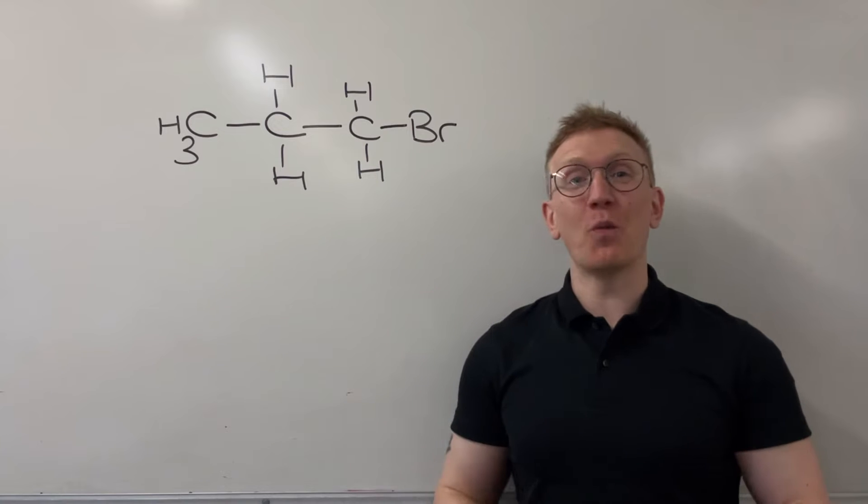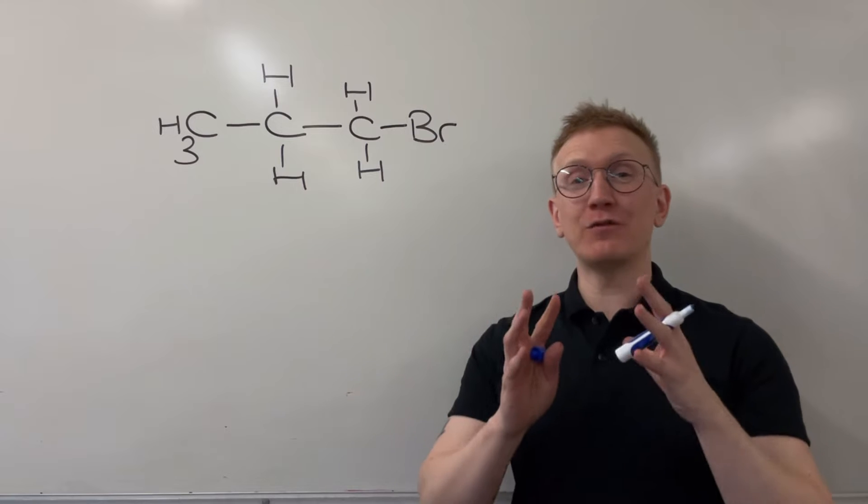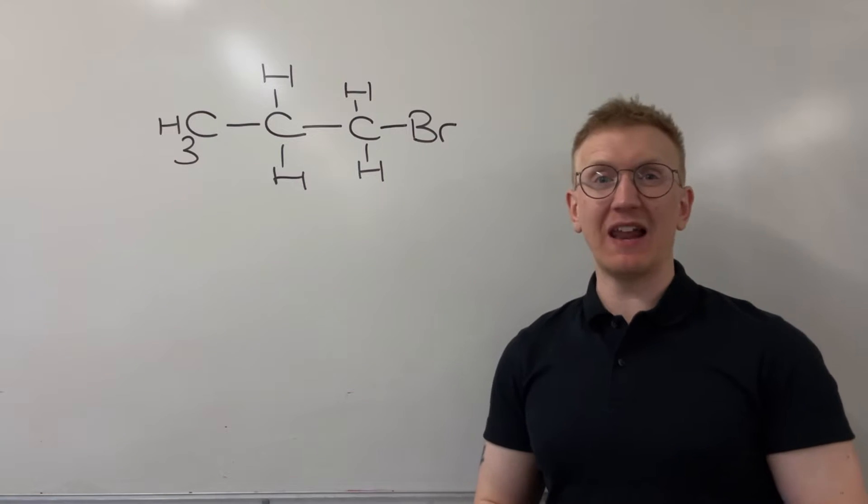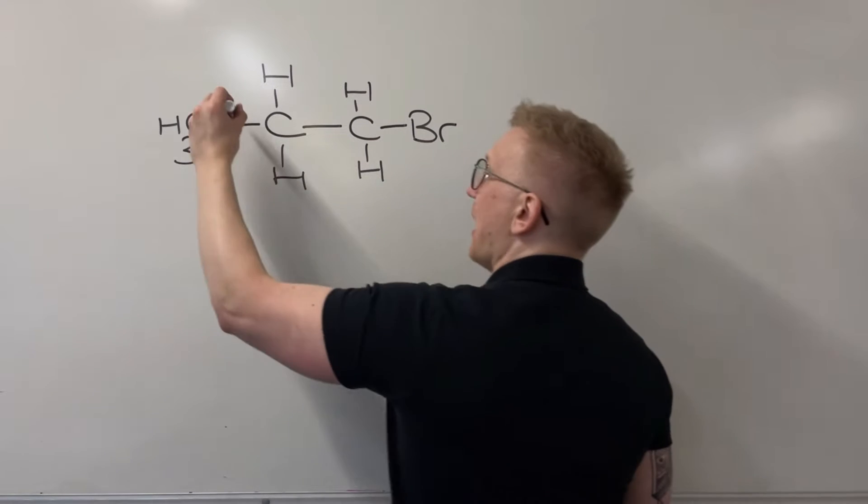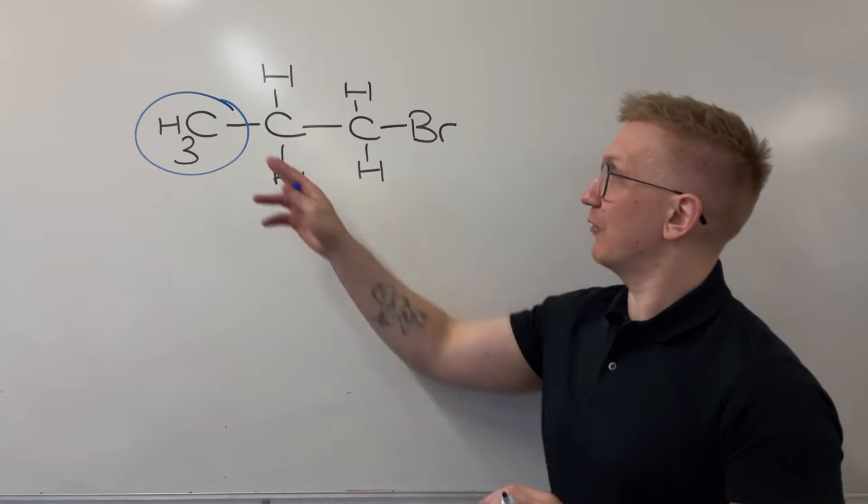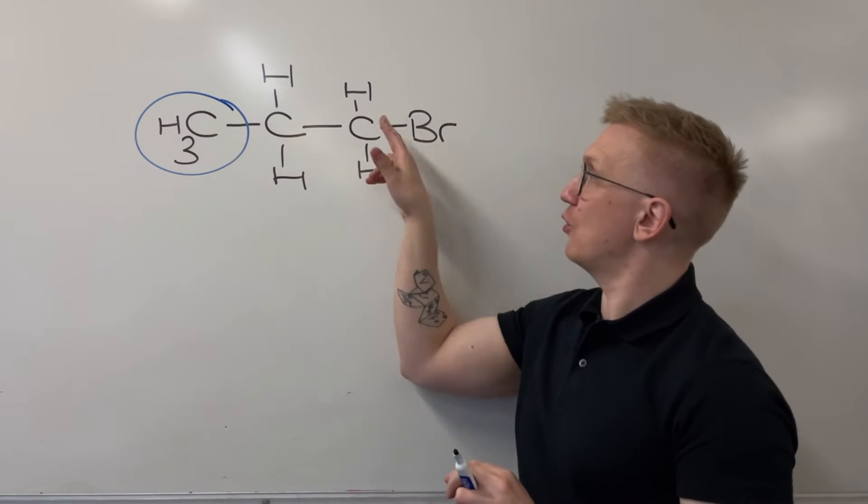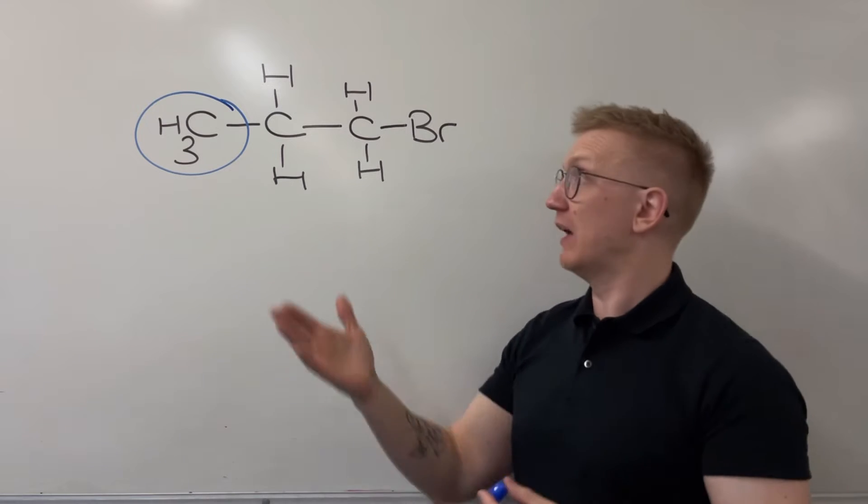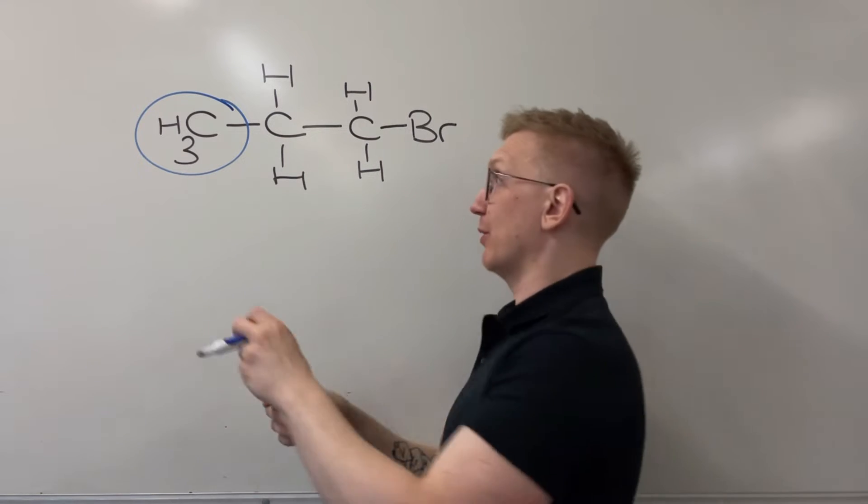So let's take a look at the 1-bromopropane. First off we're going to identify how many individual peaks we expect to see. We'll give them all a letter to make it nice and simple. I'm looking for non-equivalent hydrogen environments. So here for example this CH3 is like no other source of hydrogen on the structure. So I class this as a hydrogen environment. I'm going to call it A.